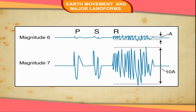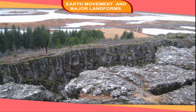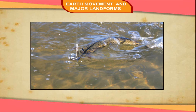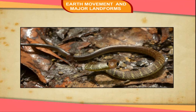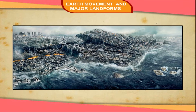Earthquakes measuring above 6 on the scale are very destructive. Although earthquakes cannot be predicted, the impact can be minimized if we are prepared beforehand. Some common earthquake prediction methods adopted locally by people include studying animal behavior — fish in ponds get agitated and snakes come to the surface.